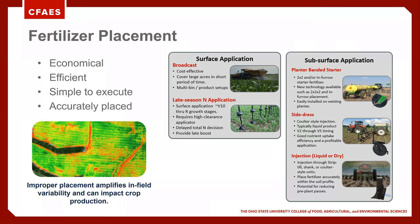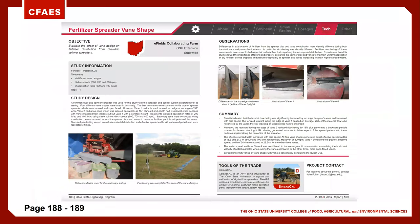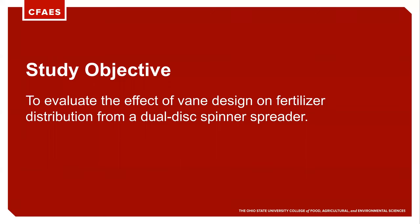In this study, we were looking at how does vein shape really impact the distribution of material, in particular the uniform distribution. You can find the information regarding this study on pages 188 and 189, which is much more detailed than what we're going to talk about here today.